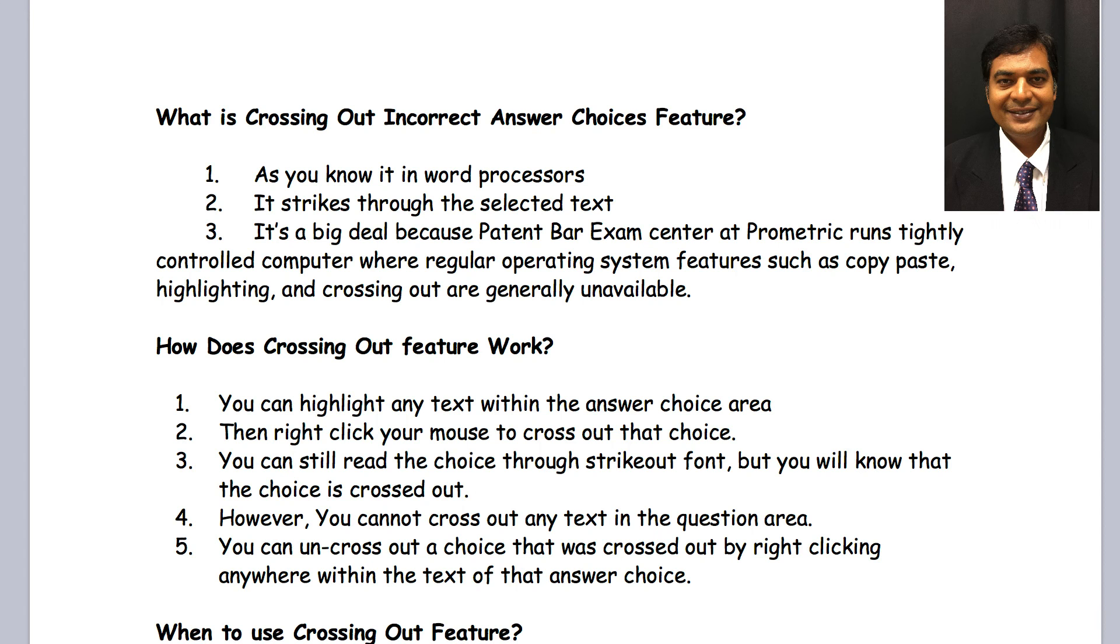So, what exactly is crossing out incorrect answer choices feature? Well, it's very similar to how we use that in word processors. For example, in the word processor, if you want to cross something out, we select that text and then we change the font to strike through that, and you can see that the text has been now struck through and you can still read part of the text. That's the whole point of the crossing out in the patent bar. Essentially, it strikes through the selected text. You can still read it but you know that it's out of contention at this point for you.